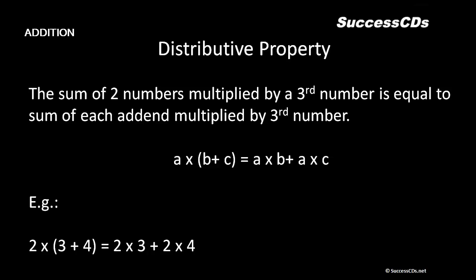Next we move on to a very important property called the distributive property. The sum of two numbers multiplied by a third number — for example, we have three numbers a, b, and c. B and c are being added and the third number a is multiplied to their sum. That means a into (b plus c) can be written as a into b plus a into c.